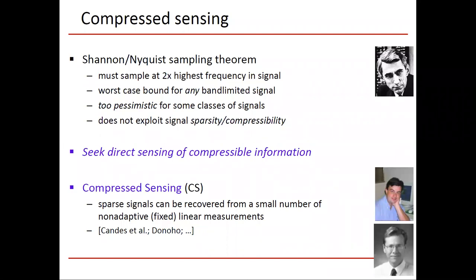Compressed sensing looks at the Shannon or Nyquist sampling theorem, which says that we need to sample above two times the highest analog frequency in the signal. It's a worst case bound for all band limited signals. But oftentimes we know more than that. This bound may be somewhat pessimistic for some classes of band limited signals, and that's because we don't exploit signal sparsity or signal compressibility. What we'd like to do is to directly sense compressible information.